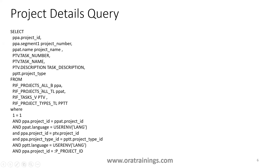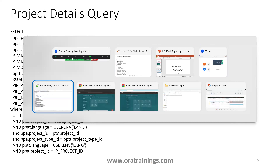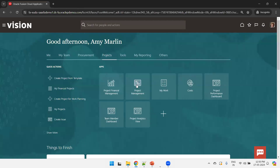Most of the tables here have a linkage of a project ID, or in the project type table you'll have a project type ID linkage. Now based on this query, we'll try to design a simple BIP report. First, we'll create a project and then navigate to the BIP report.